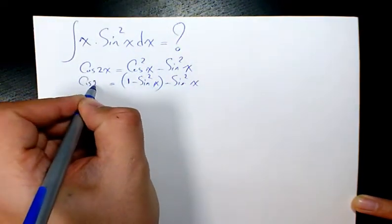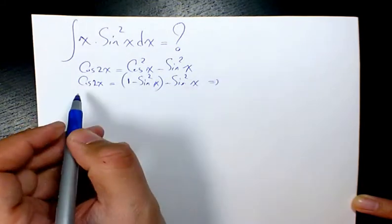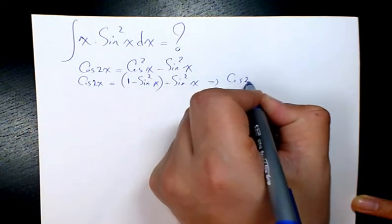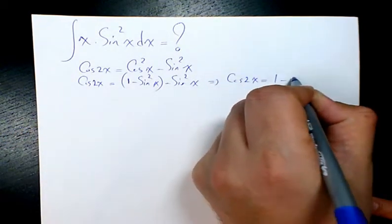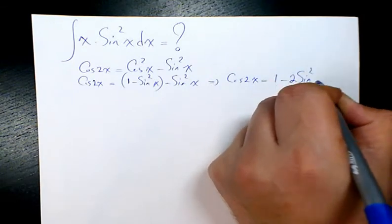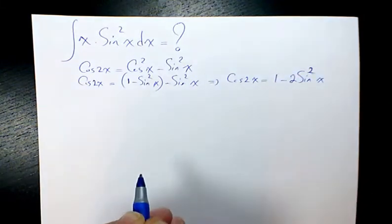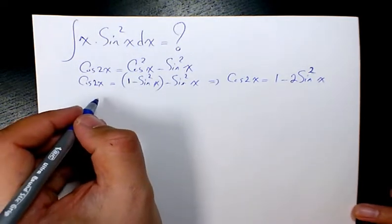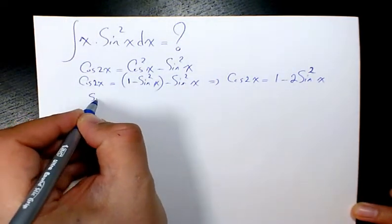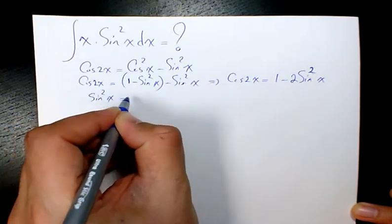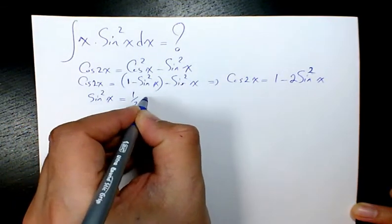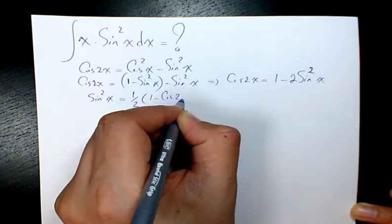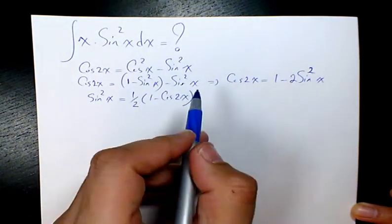Then after that I'm gonna have cosine 2x will be 1 minus 2 sine squared x, and then after that I can write sine squared x equals to 1 over 2 times 1 minus cosine 2x.